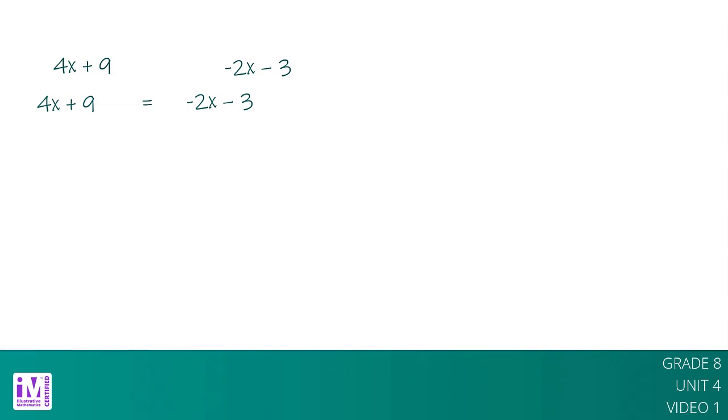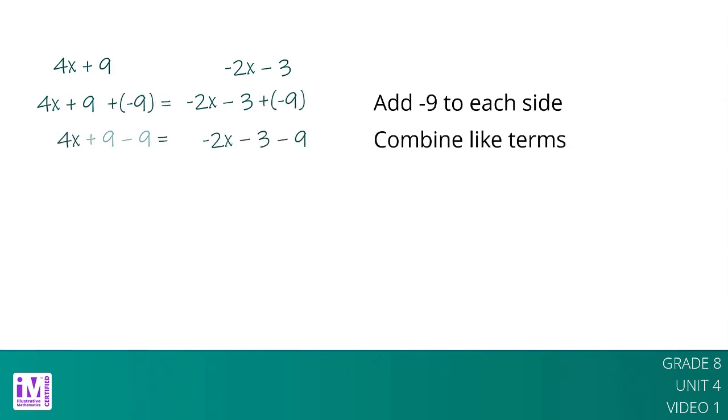Hangers help us understand that if we add the same positive number to each side of the equation, the sides will still have equal value. It also works if we add negative numbers. For example, we can add negative 9 to each side of the equation. Combining like terms results in the equation 4x equals negative 2x minus 12.